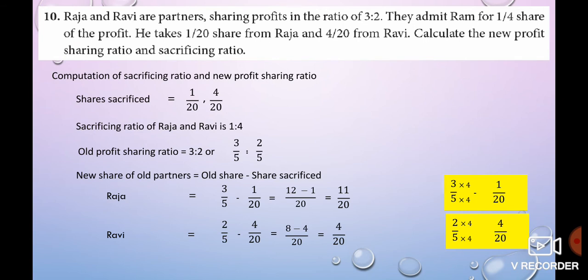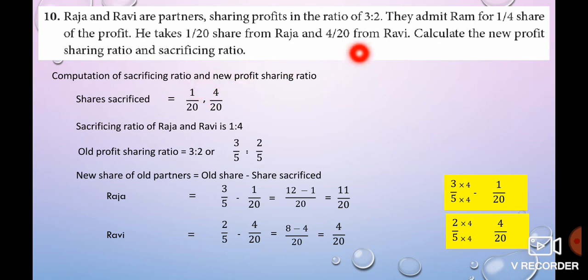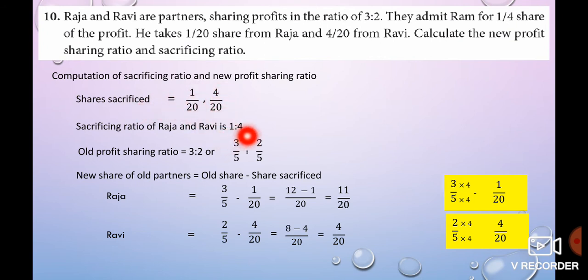Sum No. 10: Ram and Ravi are partners sharing profit in the ratio of 3 is to 2. They admit Ram for one-fourth share of the profit. He takes 1 by 20 shares from Raja and 4 by 20 from Ravi. Calculate new profit sharing ratio and sacrificing ratio. Share sacrificed: 1 by 20 and 4 by 20. Sacrificing ratio is 1 is to 4. Old ratio is 3 is to 2.